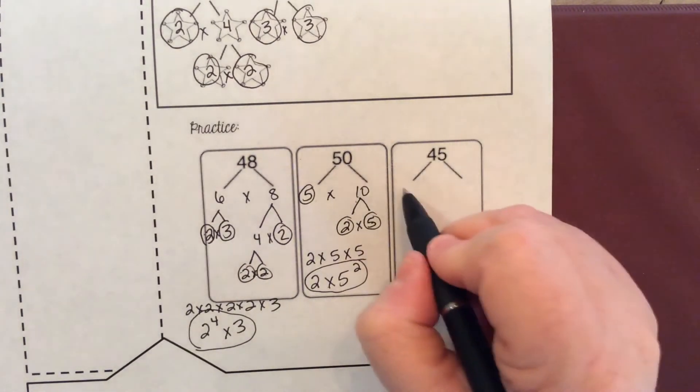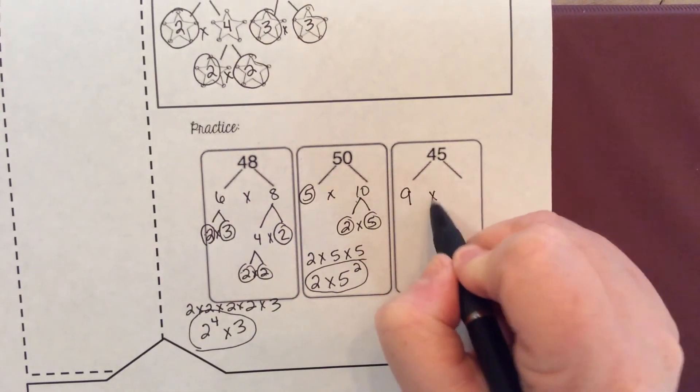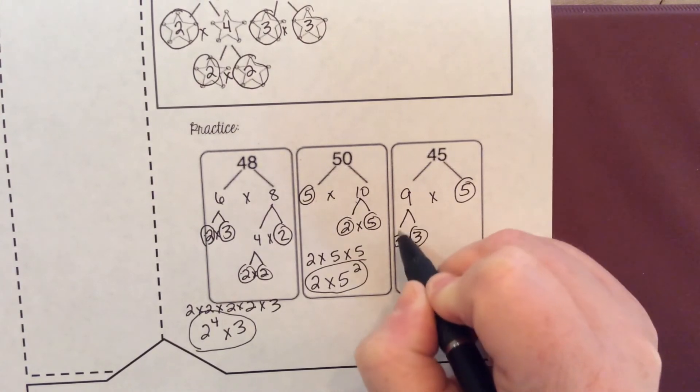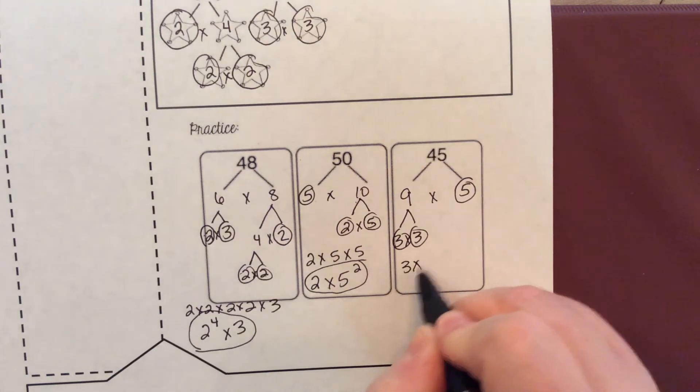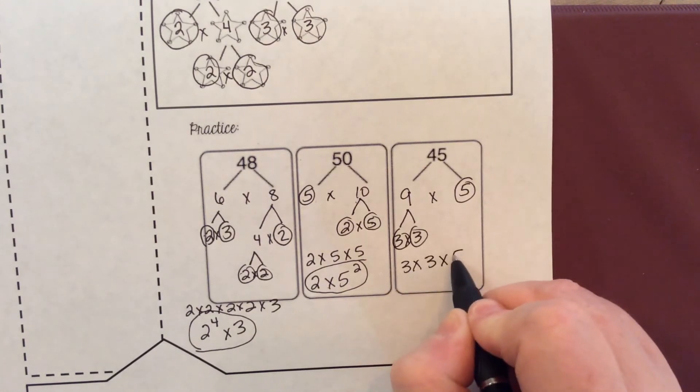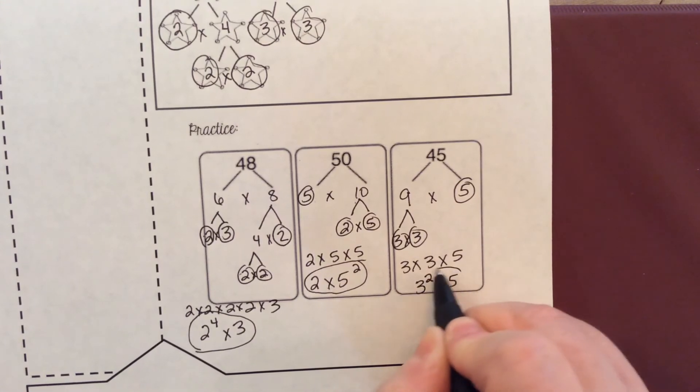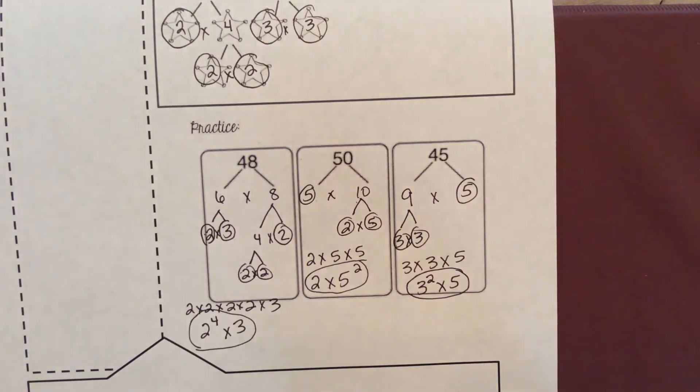Forty-five is made up of nine times five. Five is prime. Nine is made up of three times three, and they are both prime. So three times three times five, which is also the same thing as three to the second power times five, and that is my final answer.